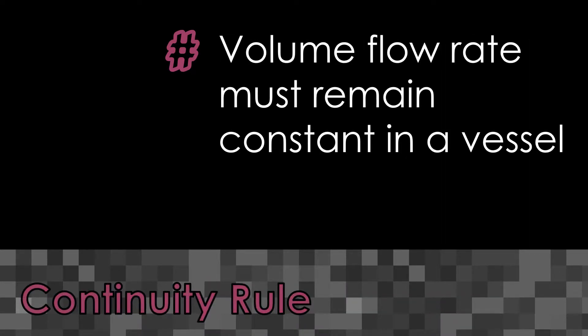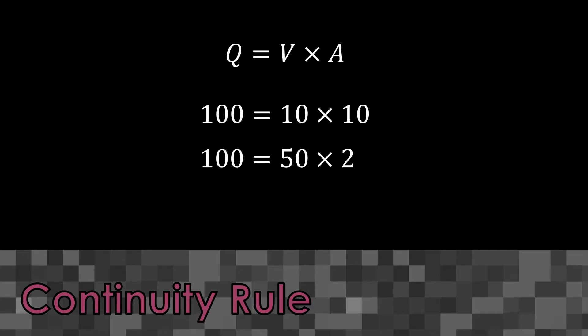The continuity rule follows the same principle as the conservation of energy law. In a stenosis, the flow volume rate has to remain the same as blood cells are not destroyed, so there must be some change in velocity to maintain the same flow rate. The equation is: flow rate equals velocity multiplied by area. If the flow rate remains constant and the area is reduced, velocity must increase. When the area reduces from 10 to 2, the velocity increases from 10 to 50 to maintain a flow rate of 100.